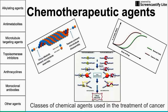This is a short video on chemotherapeutic agents. We have a few scattered pictures and diagrams here to start. On the left, we have vinca alkaloids and taxanes, which are two classes that affect microtubules. In the middle, we have the two topoisomerase inhibitors. On the right, we have a general graph that shows how chemotherapeutic agents should kill cancer cells better than normal cells. We're going to jump right into talking about the classes of these chemical agents used in the treatment of cancer.